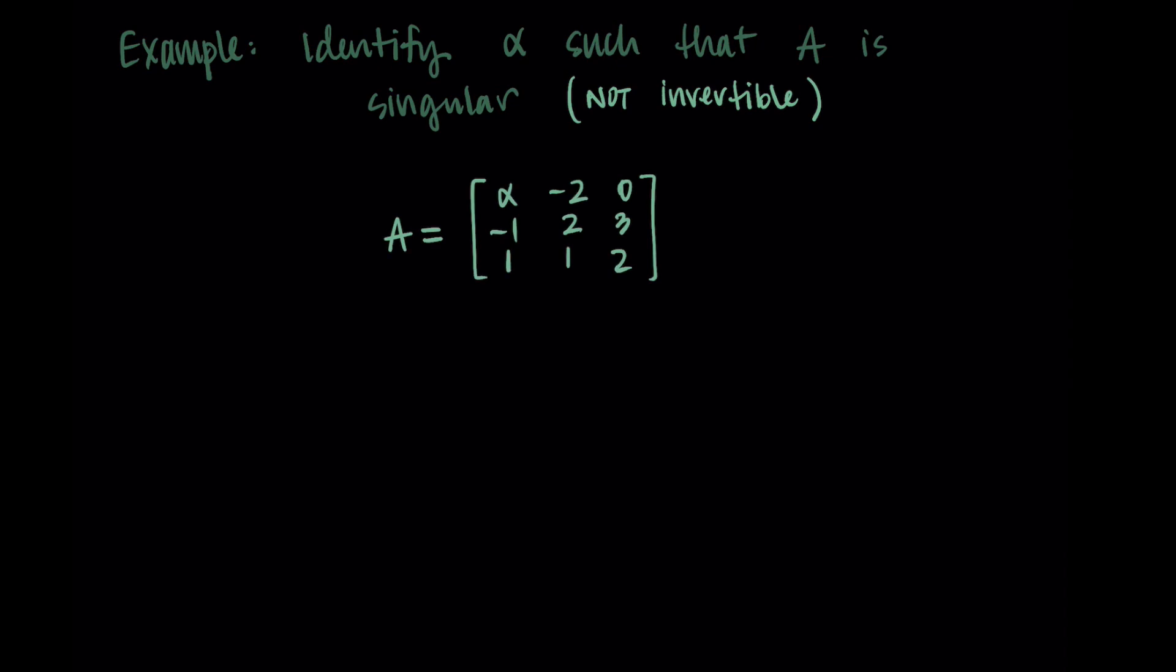So let's take this idea of the determinant relating to the invertibility of a matrix and do an example. What we're going to do is identify a value alpha such that the matrix A is singular. And remember, singular means that it's not invertible.